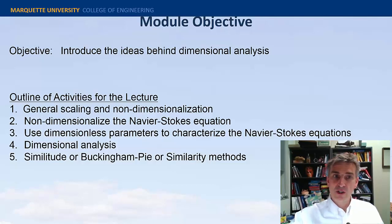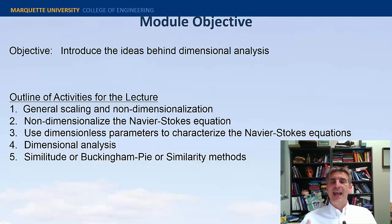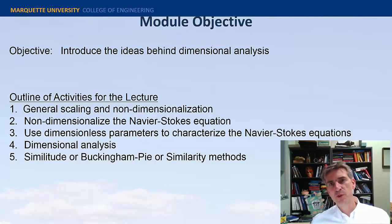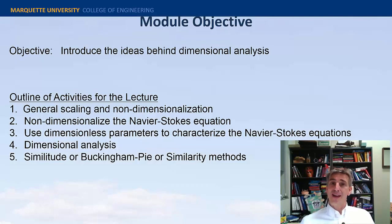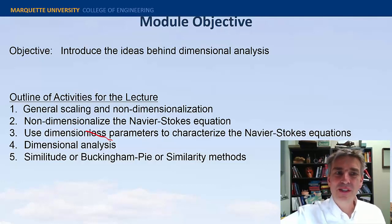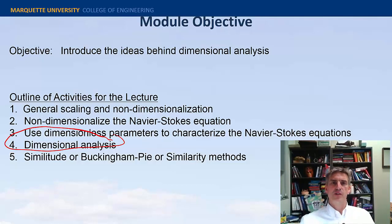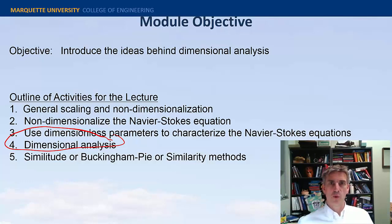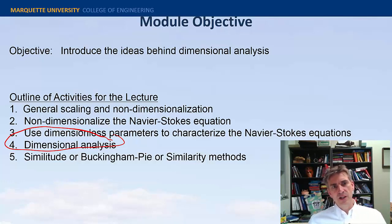We're going to use the dimensionless parameters to characterize the Navier-Stokes. Then we're going to look at some hand-waving dimensional analysis, some basic analysis of equations. My wife likes to tell me that all of fluid mechanics can be solved just by getting the units right. And in a way she's kind of right, and that's what we'll do in this section. Just some general hand-waving to come up with simple solutions or guidance for the Navier-Stokes equations, which will lead us to the more formal methodology known as Buckingham Pi, or similarity methods, or similitude.